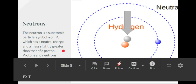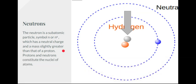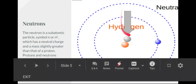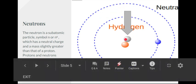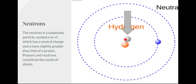Neutrons. A neutron is a subatomic particle, symbol N or N0, because it has a neutral charge. So, as you see here, it's this grey one. Perfect for its neutral charge. It has a mass slightly greater than a proton. Protons and neutrons constitute the nuclei of the atom.